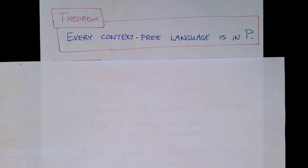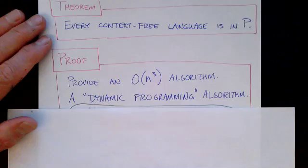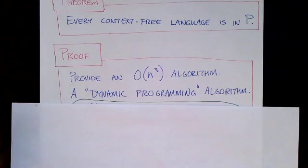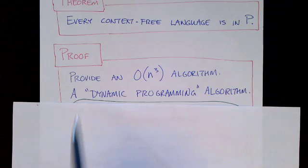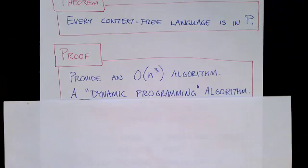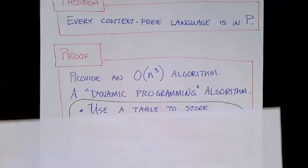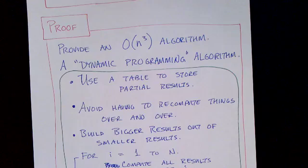Every context free language is in class P. And the reason we know this is because we have an algorithm to parse any context free grammar that runs in order n cubed time. Most context free grammars can be parsed more efficiently, but in the worst case we can do it with this algorithm that requires n cubed time.